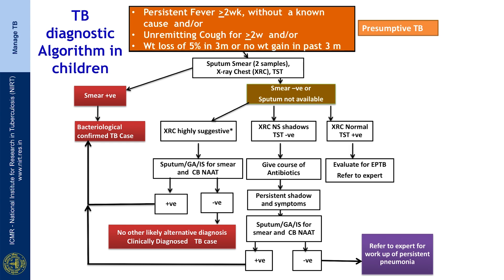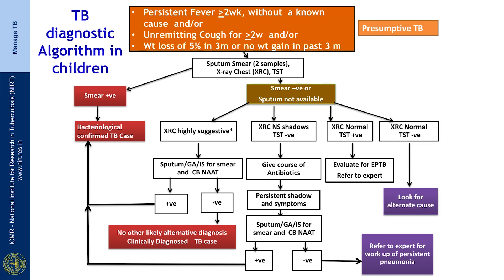A third situation could be that TST is positive, showing the child has infection, but X-ray is normal. If this child is symptomatic, this merits evaluation for extra-pulmonary TB and may require referral to an expert. However, if both chest X-ray and TST are negative, one must look for alternative causes — this child may not be suffering from TB at all.